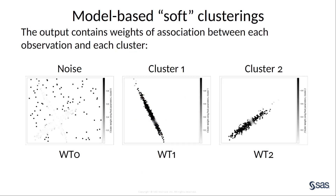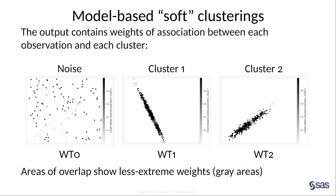You can also examine the soft clustering values, which are stored in the WT0, WT1, and WT2 variables in the output data set. In this plot, the color of the point is darker for stronger associations. When you look at the WT0 values, which indicate strength of association with the noise cluster, they are highest outside of the X shape. In areas where two clusters cross, the strength of association for any cluster is lower, producing gray areas.